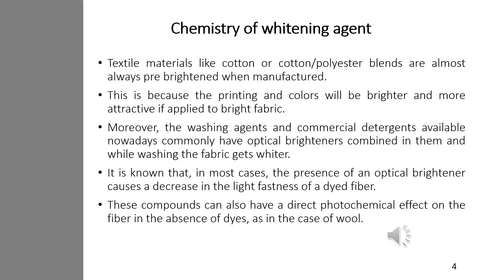Textile materials like cotton or polyester blends are almost always pre-brightened when manufactured. These materials are blended with optical brightening agents in the process of their manufacturing.